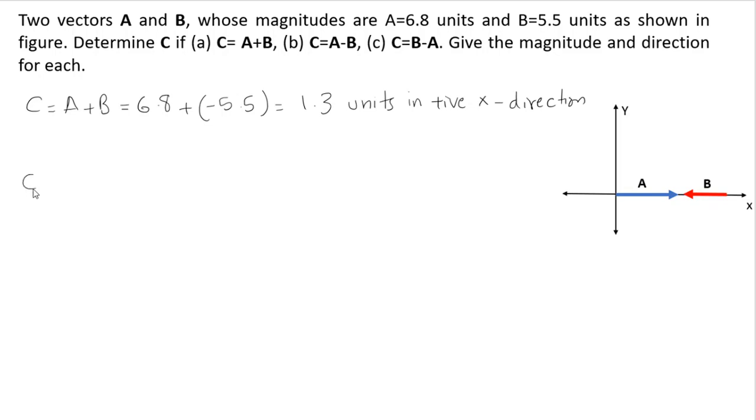For the second part it is A minus B. Now what will happen, this negative will make B as positive, so this will become 6.8 plus 5.5 which will give us 12.3 units. And again because the magnitude is positive, the direction will be in positive x direction.